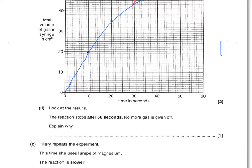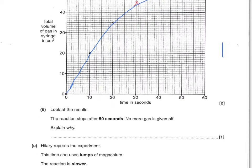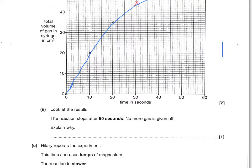Looking at the results, the reaction stops after 50 seconds and no more gas is given off. Explain why. The reason a reaction stops is because the magnesium, or the hydrochloric acid, or the reactants have been used up. You need to say that one or both of the reactants have been used up.